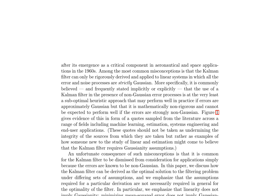The paper discusses the historical development of the Kalman filter, which was originally derived as the optimal solution to the linear estimation problem under the assumption of Gaussian errors. However, the authors emphasize that the optimality of the Kalman filter does not rely on Gaussianity, but rather on the assumptions of linearity, independence of errors, and knowledge of the error covariance.